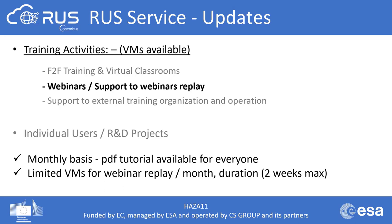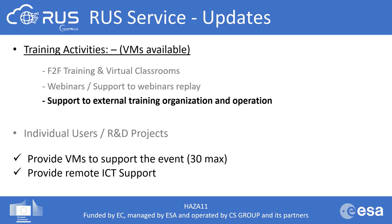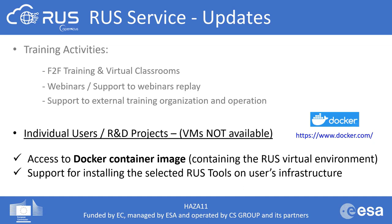For those who receive a VM for replaying a webinar, the availability will not exceed two weeks. For external training requests, 30 virtual machines maximum will be provided per event with remote ICT support. For individual users wanting to perform a project, the standard RUSH VMs will no longer be available; instead, a docker container image solution will be offered. It will contain the RUSH virtual environment and the ICT team will support you in accessing the docker and installing selected RUSH tools on your own infrastructure.